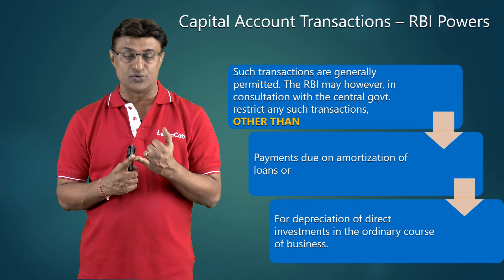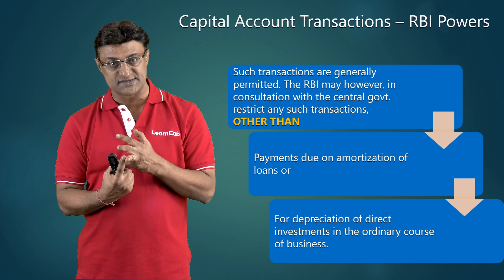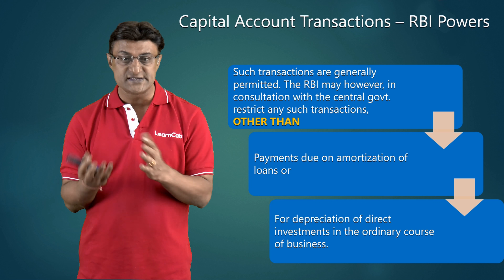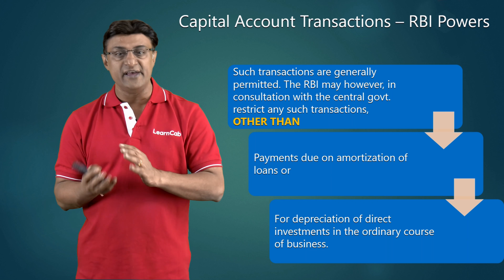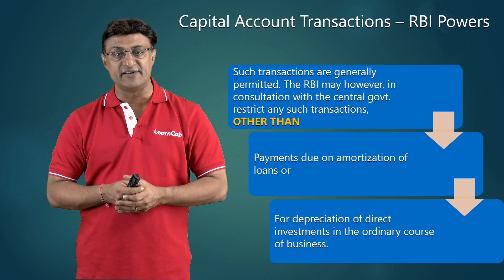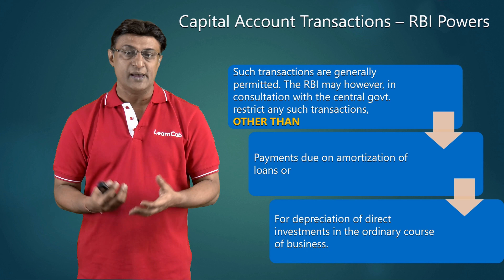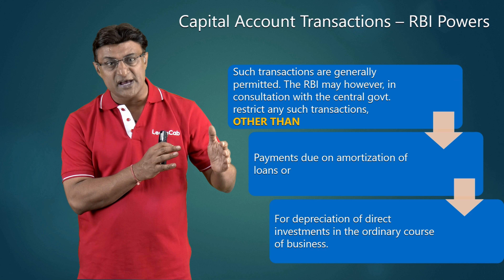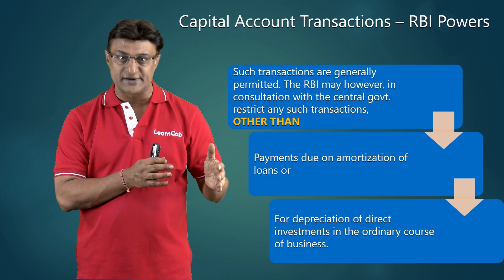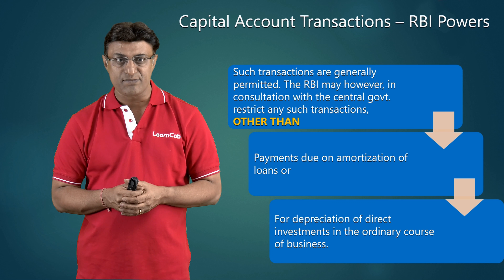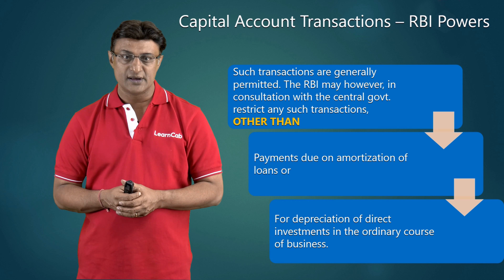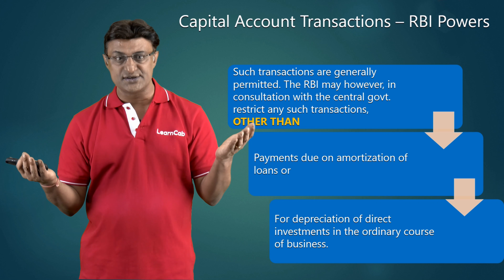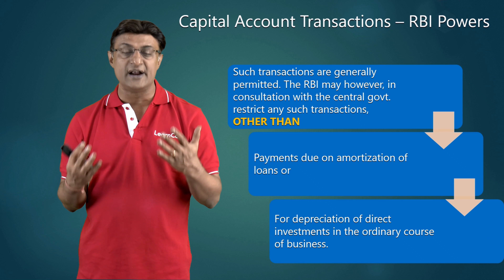The RBI may restrict transactions, but only in consultation with the central government. They can restrict any such transactions other than payments due on amortization of loans or for depreciation of direct investments in the ordinary course of business. Both of those are very specific — there is no room for generality. This power has already been used and there are restrictions in place.